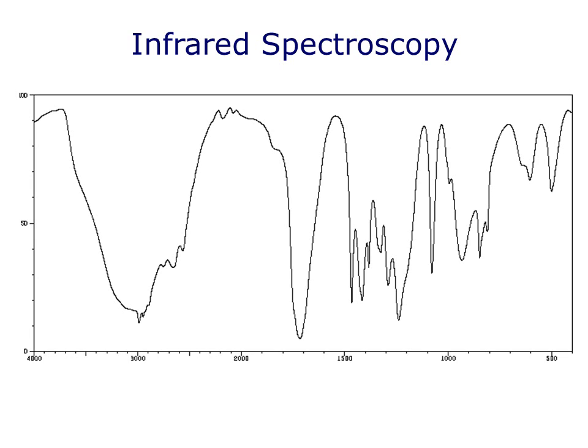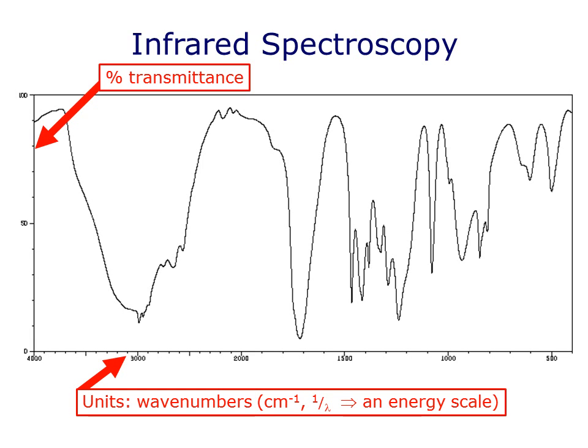A typical IR spectrum looks something like this. On the y-axis, we show the percentage transmittance, or sometimes the percentage absorbance. The more light that has been absorbed, or the less it's transmitted — meaning the same thing effectively — the stronger the signal. So signals like this one here, or over here, are strong signals, whereas a little blip like this one up here is not so strong. Along the x-axis, we have an energy scale. The units for this are reciprocal centimeters, or wave numbers, which is the inverse of the wavelength. A typical IR spectrum scans the range below 4,000 wave numbers, and where in the spectrum signals appear depends directly on what bonds are present in the molecule.